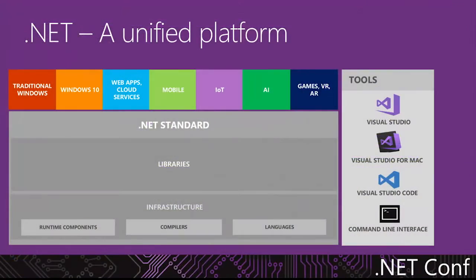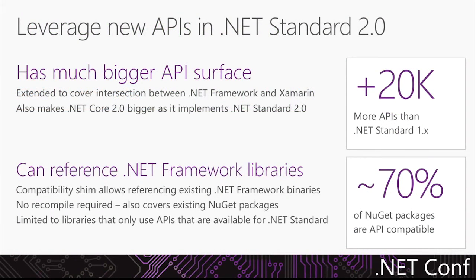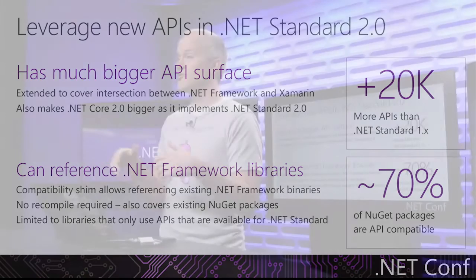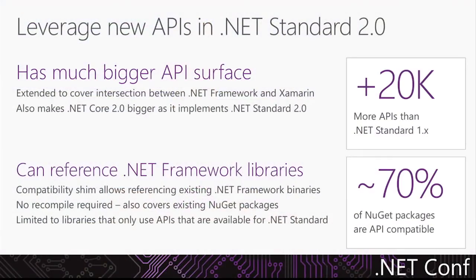ASP.NET Core is part of a unified .NET platform that is good for a variety of application types. One of the great new features in .NET Core 2.0 is support for .NET Standard 2.0, which adds tens of thousands of APIs to the standard .NET platform. There are so many new APIs in .NET Standard 2.0 that there's now compatibility with full .NET Framework libraries that you can reference from your .NET Core applications and they just work.